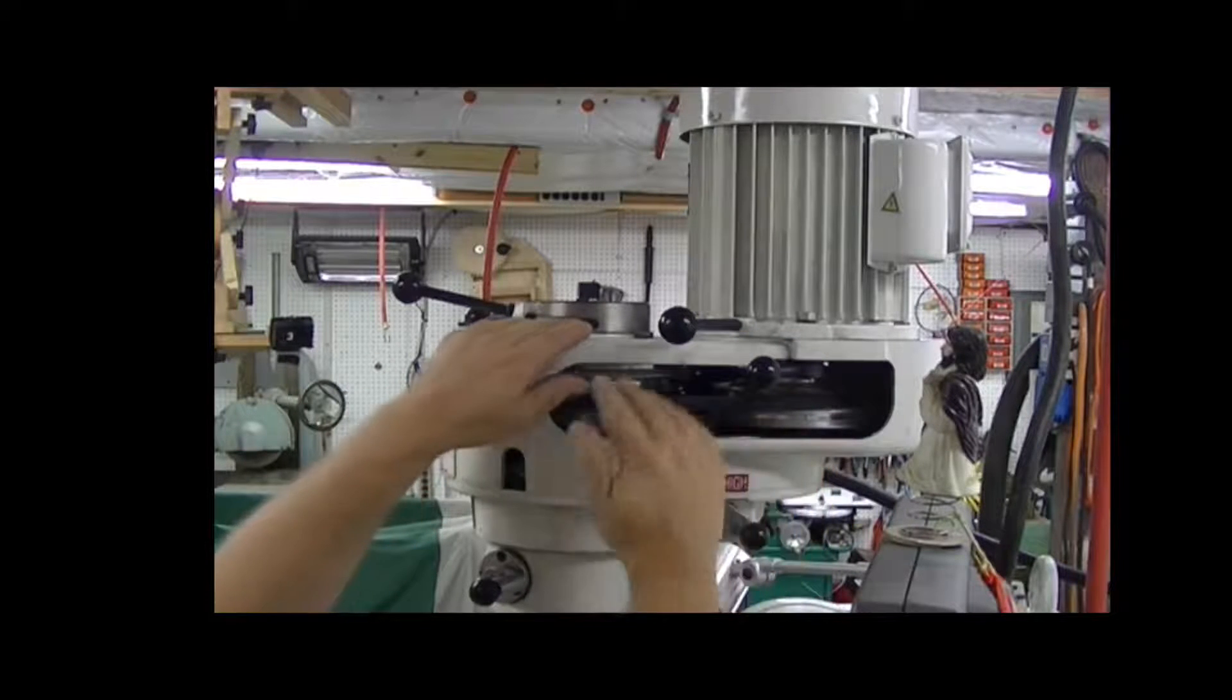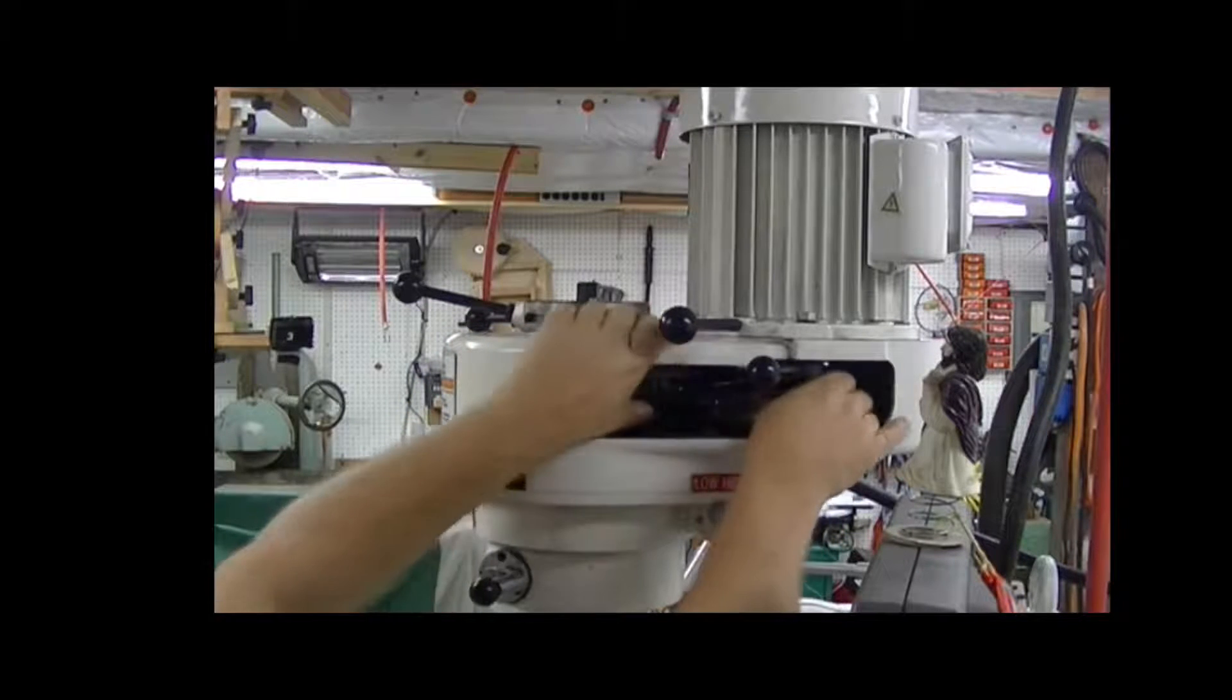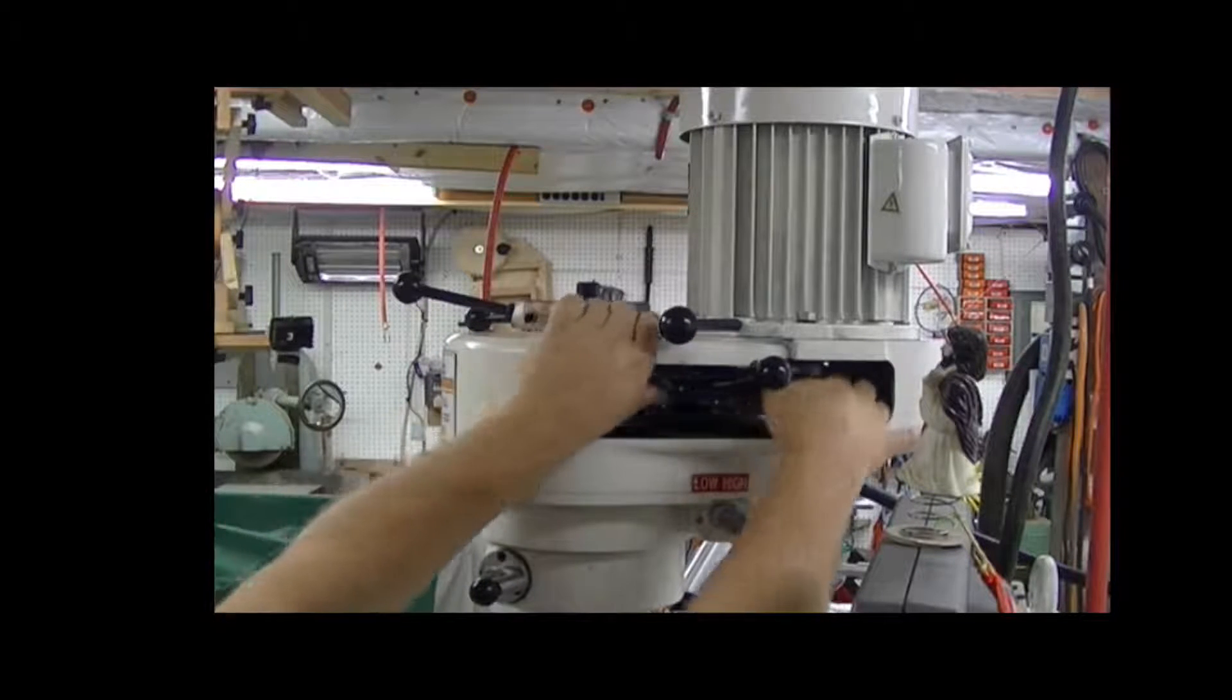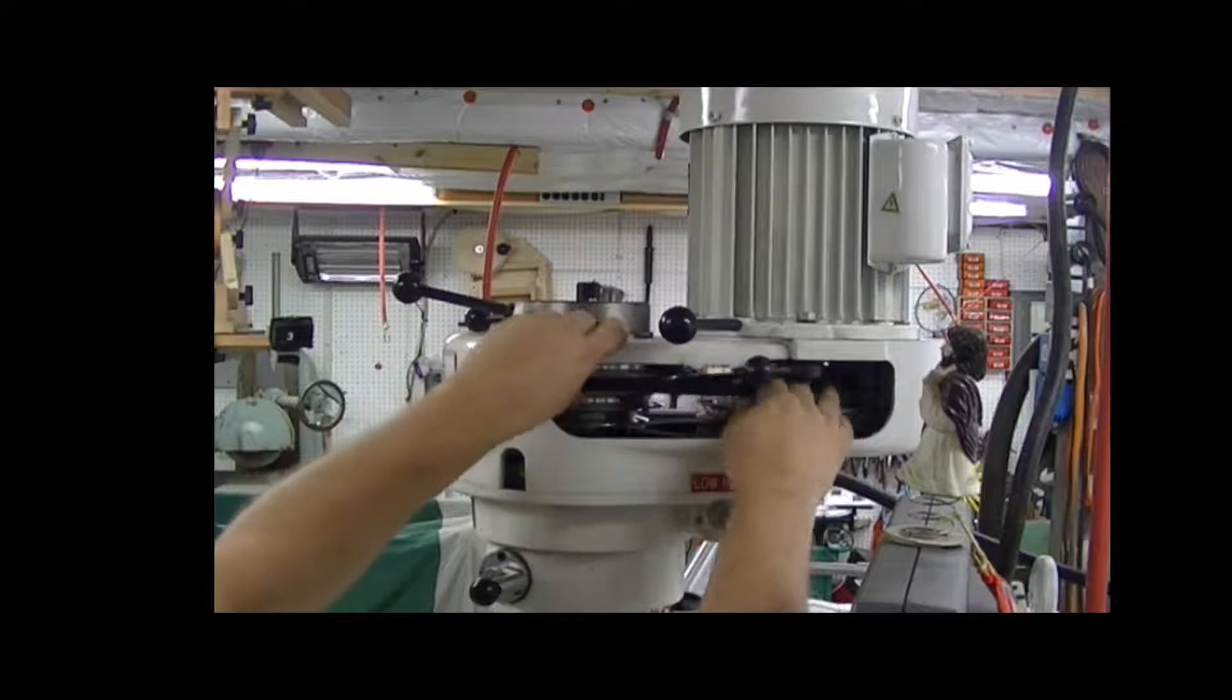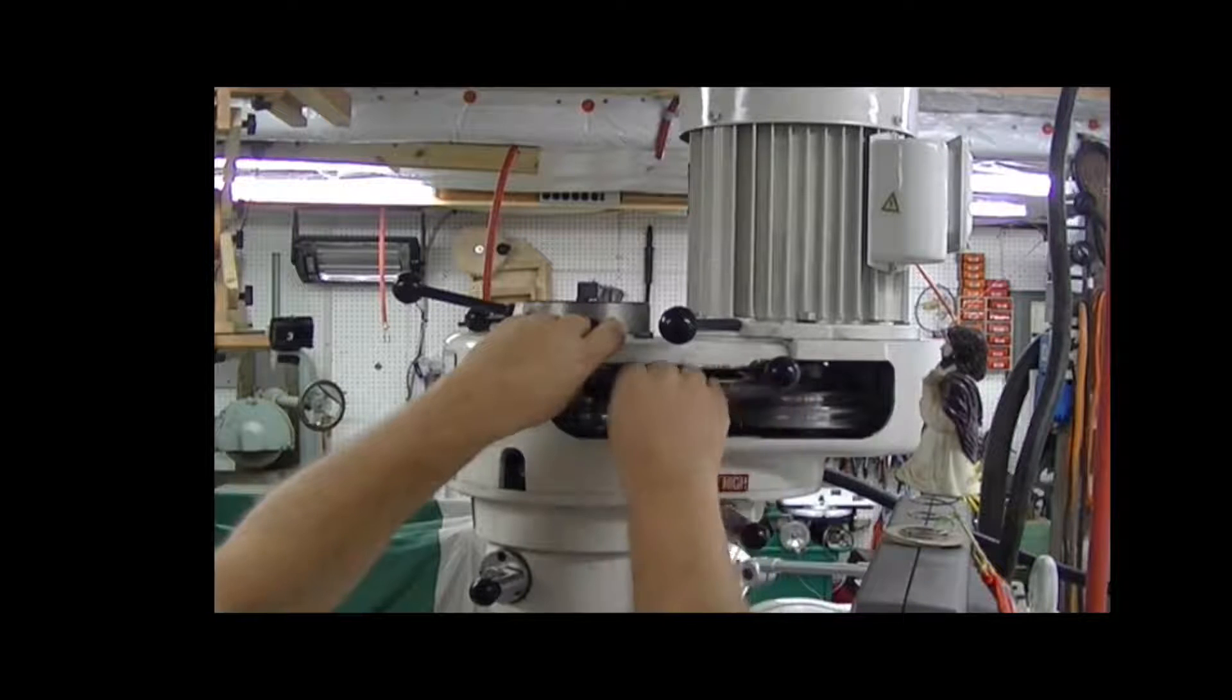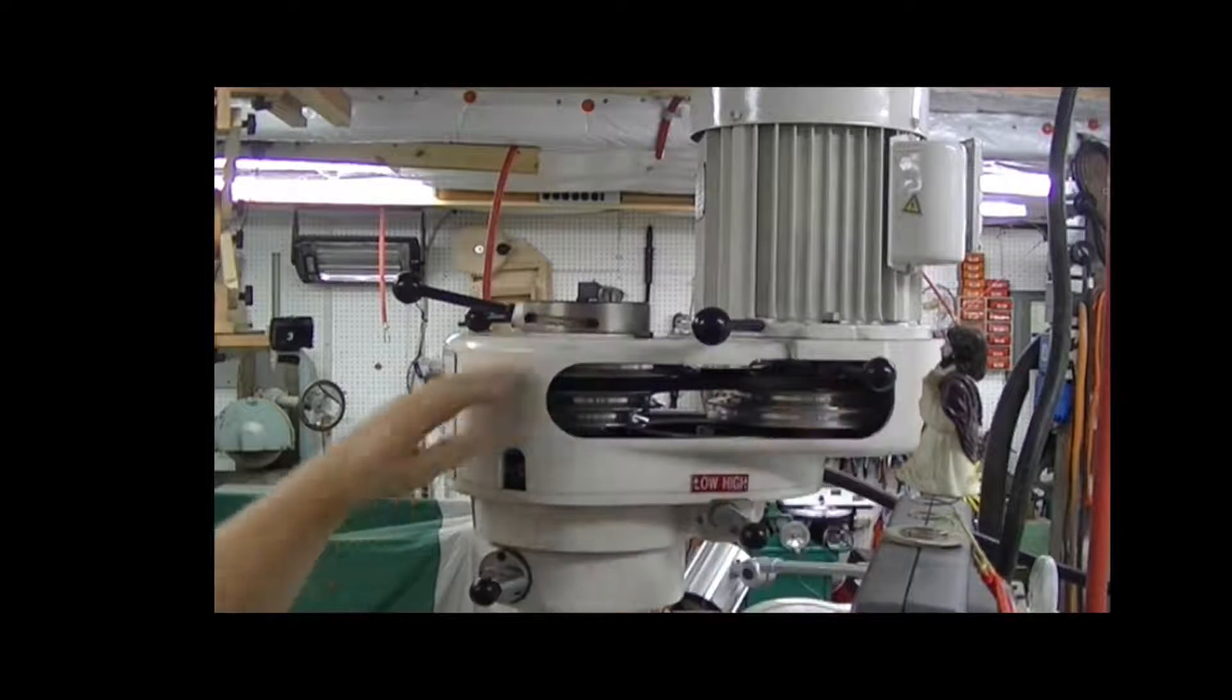And then, whichever way you're going, you move from the large to the small pulley first, and then move from the small to the large pulley on the other pulley. Then tension the belt and lock it in place.